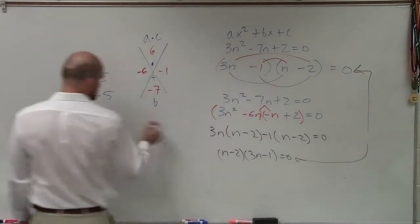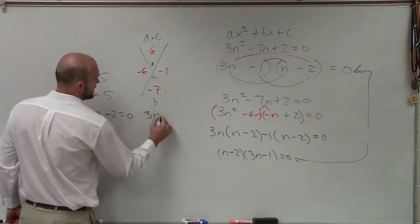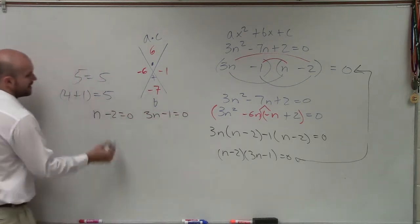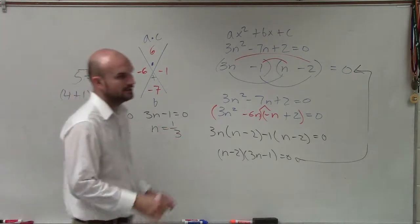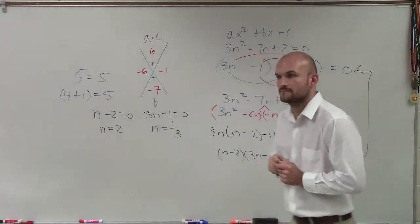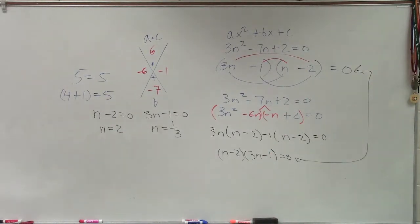Now we need to solve them so I can use zero product property. So n minus 2 equals 0 and 3n minus 1 equals 0. Now I'm going to solve n equals 2, n equals 1 third. And that's your solution set. There you go. Questions?